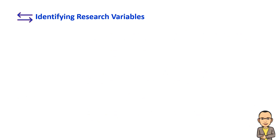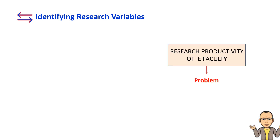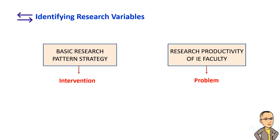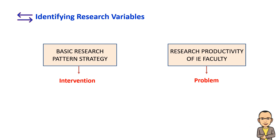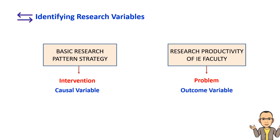This is an example of action research. The researcher has determined that there is low research productivity among faculty during the COVID-19 pandemic. As a remedy, an intervention is proposed: a capacity building program using basic research pattern strategy, or BRP strategy. The faculty participants are guided by patterns in writing their manuscripts. The causal variable is the basic research pattern strategy, while the outcome variable is research productivity of faculty of the Institute of Education.